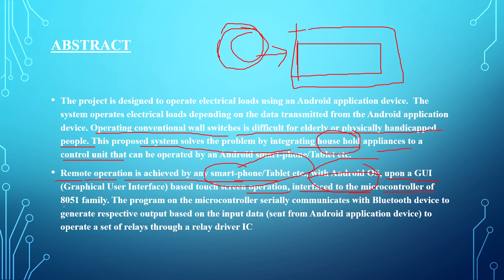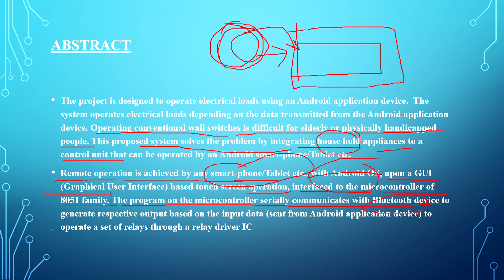The interface connects to the microcontroller of the 8051 family. The 8051 microcontroller program serially communicates with a Bluetooth device, which connects with the appliances. The Bluetooth module must connect for transmission, receiving, and sending commands. Based on the input data, output is generated and sent to the Android application device to operate a set of relays through a relay driver IC.